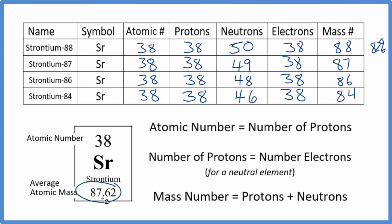87.62. So if you're not given the neutrons or the mass number, you can round this to 88, which would be the most common isotope of strontium.